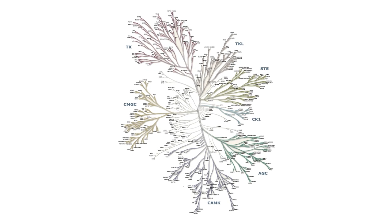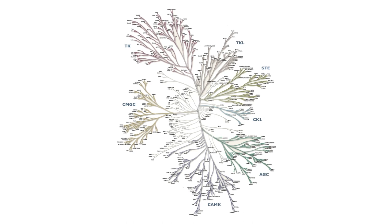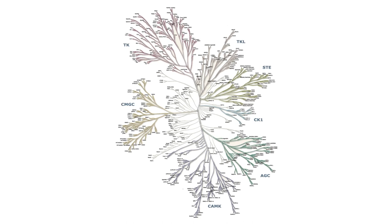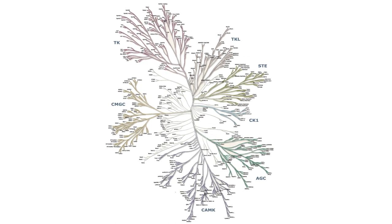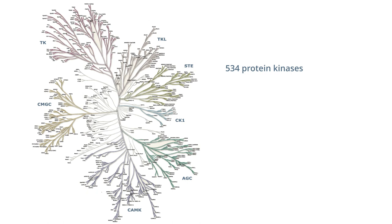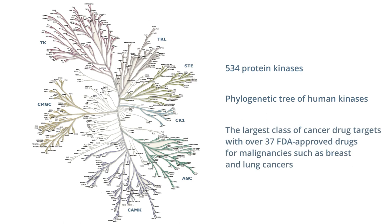Protein kinases are enzymes that regulate a diverse array of cellular processes in our bodies by functioning as on-off switches. In our genomes, we encode about 500 or so of these enzymes, and a dendrogram of how they're related in primary sequence is shown on the left here. This is called a phylogenetic tree of all the human kinases, also referred to as the human kinome. Because of the importance of these enzymes, there is a major effort in targeting them for drug discovery efforts.